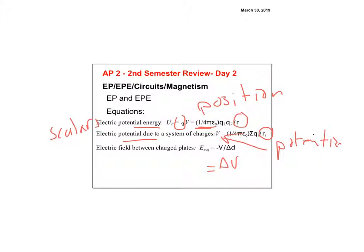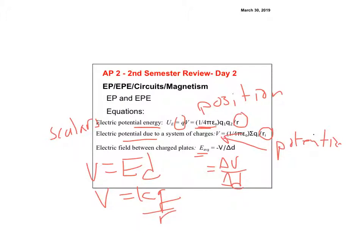The E-field is technically negative delta-V over delta-D, but think of it as the change in potential over change in distance — that's for a constant E-field between two charged plates. People confuse V = ED (for a parallel plate capacitor) with V = KQ/R (for a point charge) — these are not interchangeable.